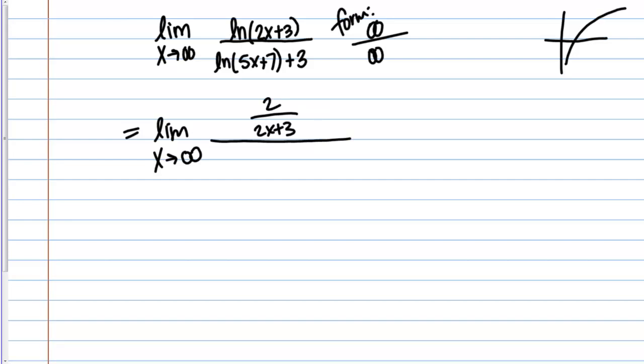What about on the bottom? Natural log of 5x plus 7 is going to be 1 over 5x plus 7 times 5 and then plus 0. What we have then is 2 over 2x plus 3 all over 5 over 5x plus 7.